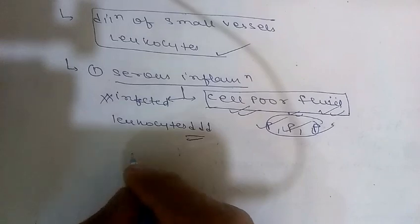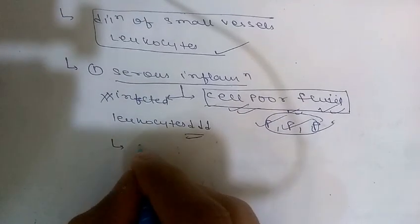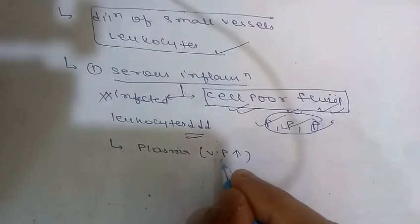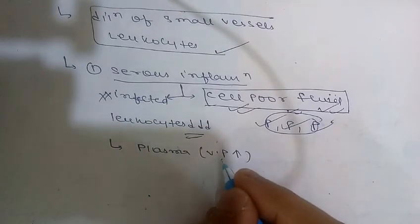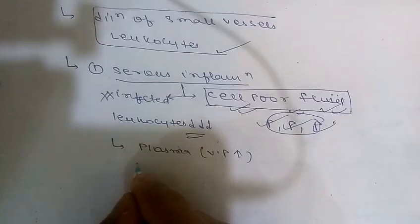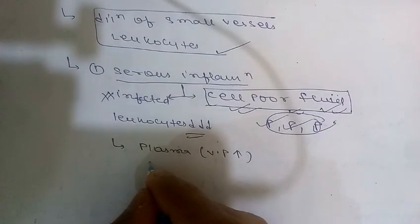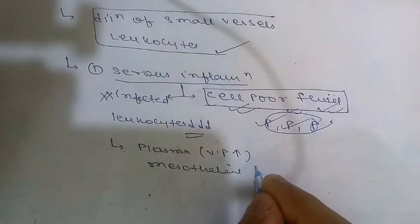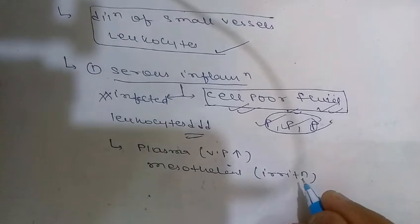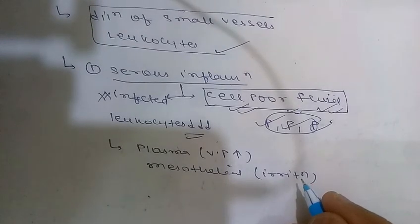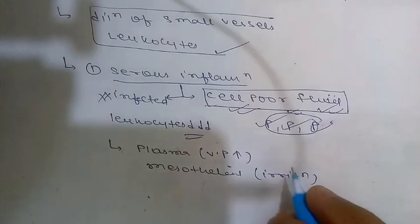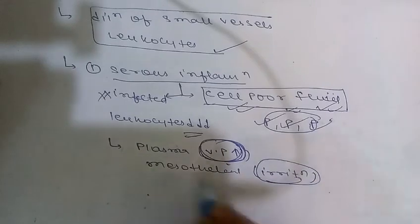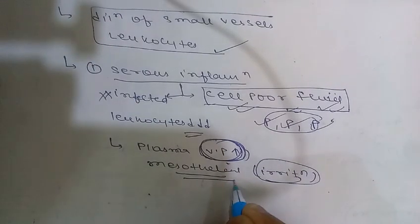In body cavities, the fluid may be derived from two sources: first, from plasma due to increased vascular permeability, allowing plasma fluid to come directly from blood vessels; and second, from secretions of the mesothelial cells due to irritation. So there are two mechanisms through which fluid enters body cavities — increased vascular permeability and irritation of mesothelial cells.